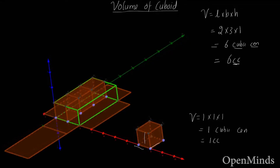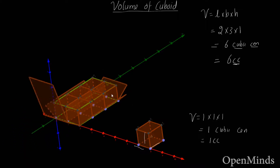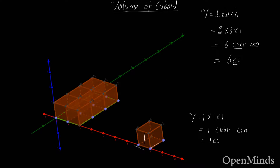We can place three cubes inside the box initially, then add a fourth, fifth, and sixth. So the volume of this box is six cubic centimeters — we can fit exactly one, two, three, four, five, six cubes inside. That's how we understand what the volume means.